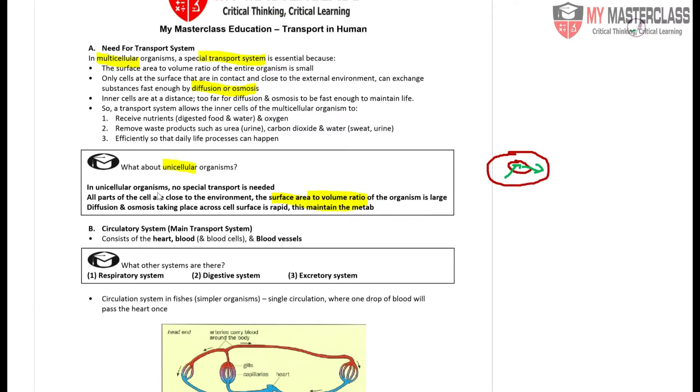Unicellular organisms do not require special transport, whereas multicellular organisms require special transport because we have cells that are all the way inside. For example, our liver is situated way inside the body. The purpose of the transport system is to receive substances and remove waste products so that life processes can happen efficiently.